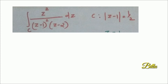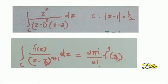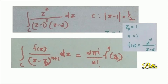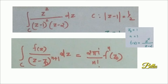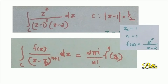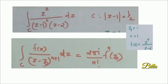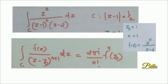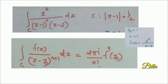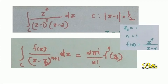We have to concentrate only on the singular point which lies within C, which is 1. So we keep Z₀ = 1. The singular part corresponding to 1 is 1/(z−1)² with power 2. Since the power is greater than 1, we apply Cauchy's Integral Formula for derivatives. We choose Z₀ = 1 and N = 1. The part 1/(z−z₀)^(n+1) corresponds to 1/(z−1)², so the suitable f(z) is z²/(z−2).